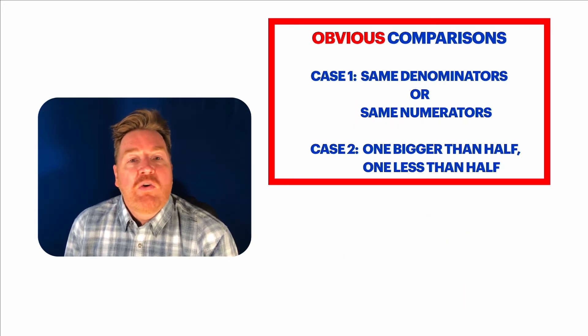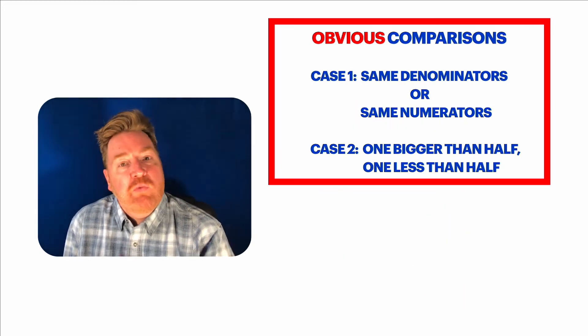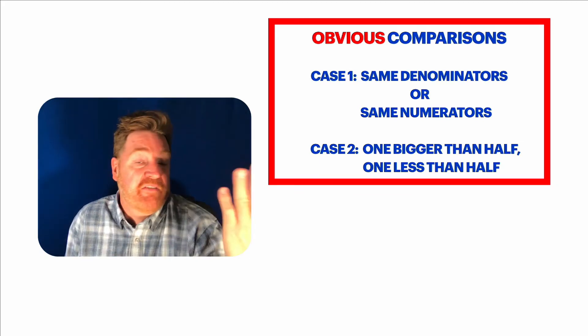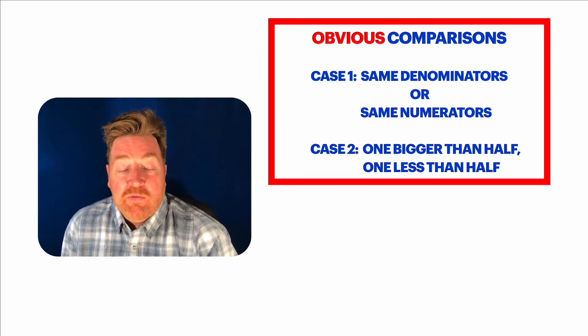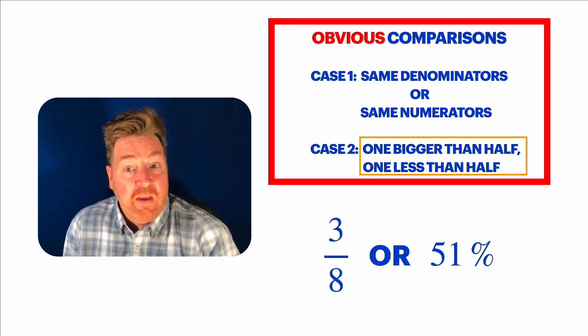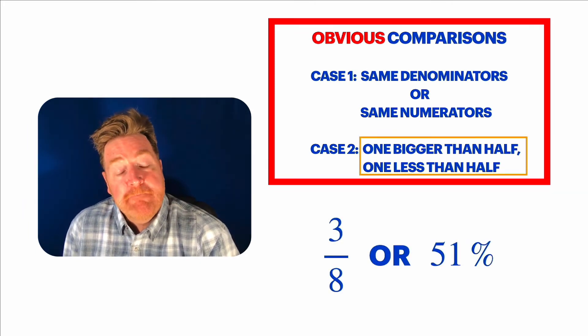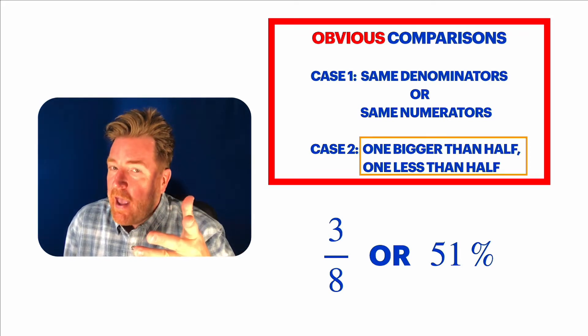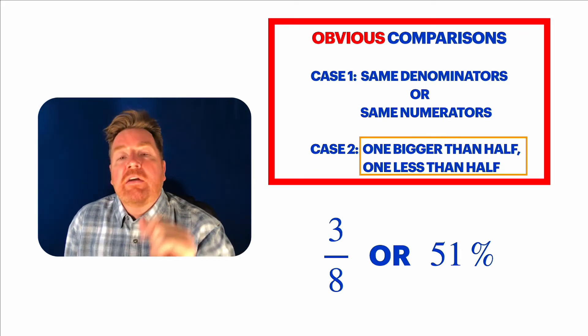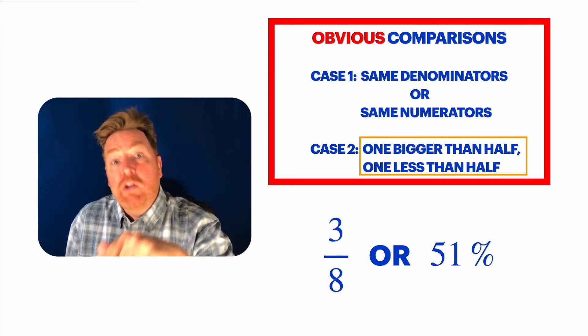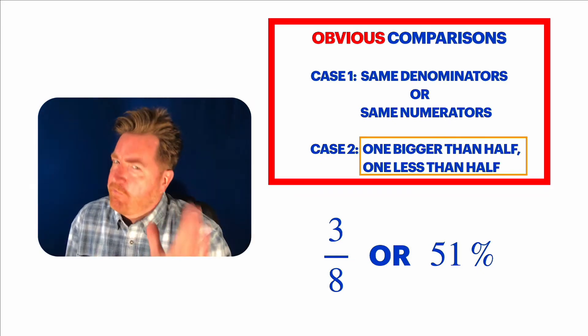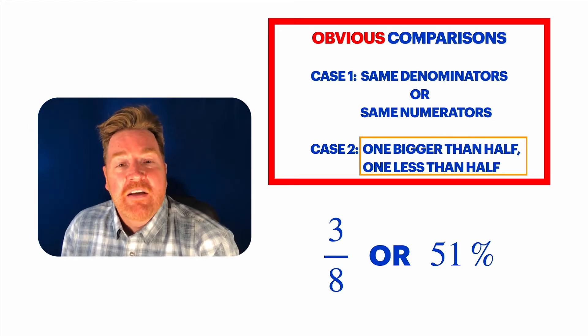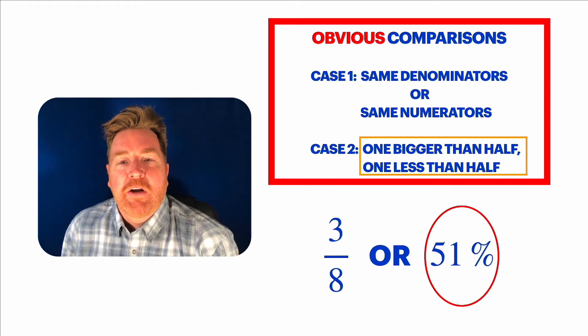Here, you try. What's bigger? Two-ninths or two-fifths? This is an obvious comparison because they have the same numerators. What's bigger? A ninth or a fifth? Good. Fifths. So, two-ninths has to be smaller than two-fifths. Two-fifths is the bigger number. There was that other case where that made it obvious, where if one number was less than a half and one of the numbers was bigger than a half, we call that obvious because we don't need to do any work.